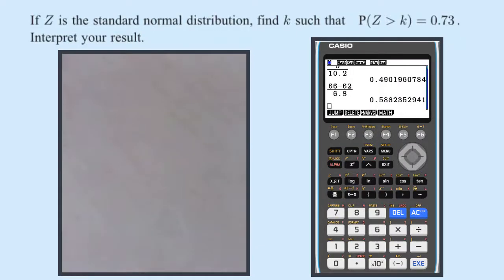If Z is the standard normal distribution, find k such that the probability that Z is greater than k is 0.73. So the standard normal distribution is a normal distribution with a mean of 0 and standard deviation of 1. So what I'm going to do is draw it.